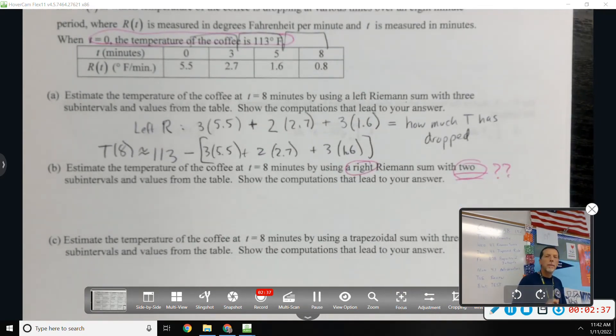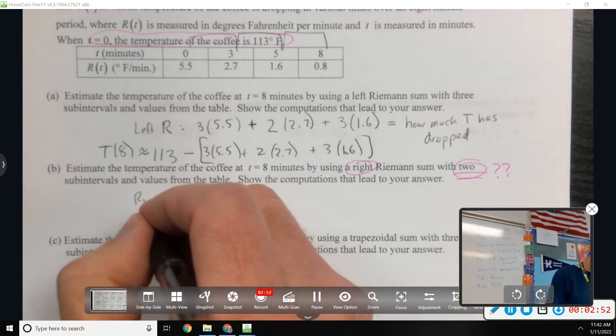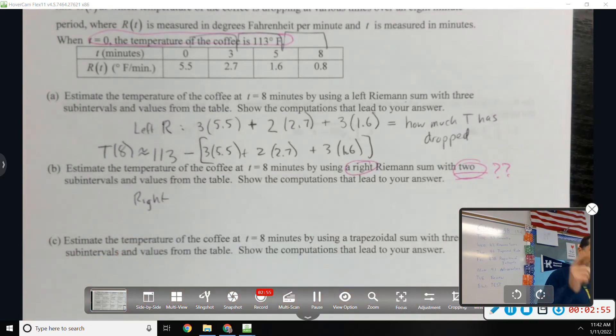So would you do 3 times 2.7 and then 0 to 4, 4 to 8? Well, 0 to 4 and 4 to 8, except you don't have data at 4. So would you do 3 times 2.7 and then 5 times 0.8? OK. There are multiple ways to do this, and what you said would be fine.